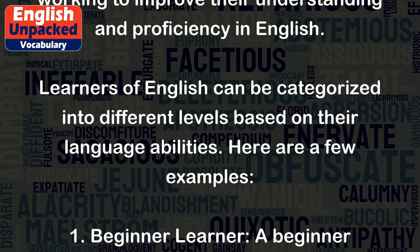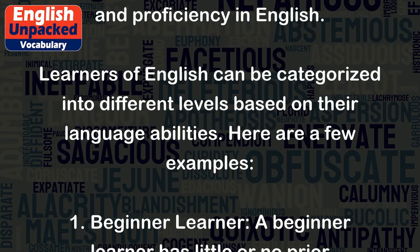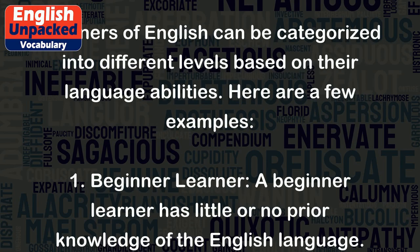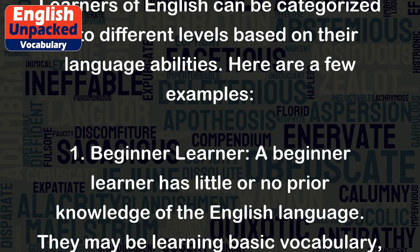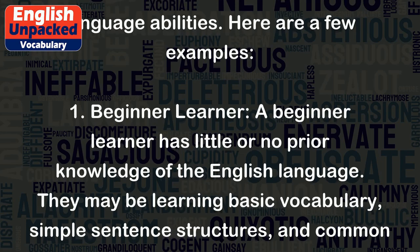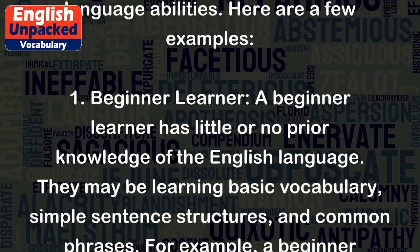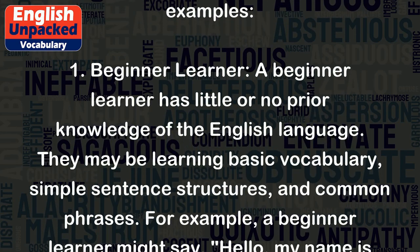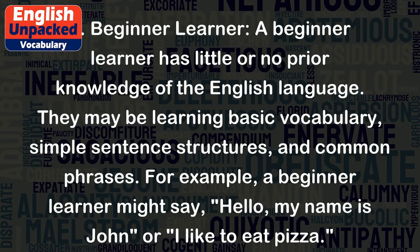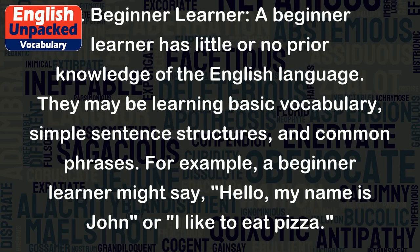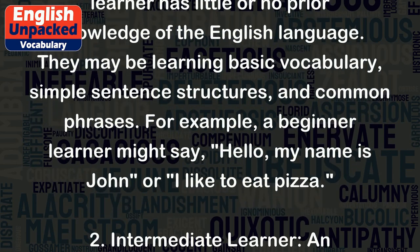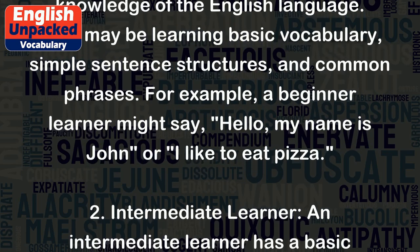1. Beginner learner. A beginner learner has little or no prior knowledge of the English language. They may be learning basic vocabulary, simple sentence structures, and common phrases. For example, a beginner learner might say, 'Hello! My name is John!' or 'I like to eat pizza.'